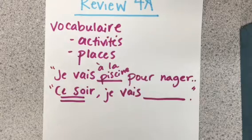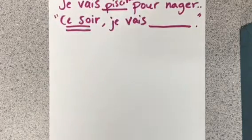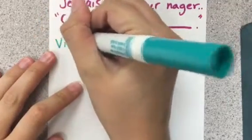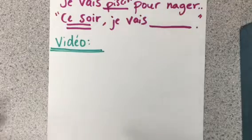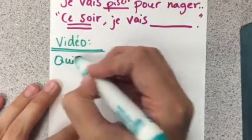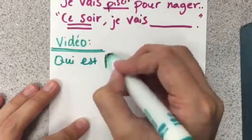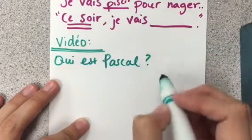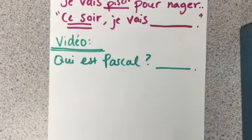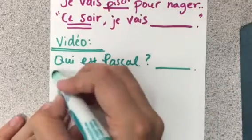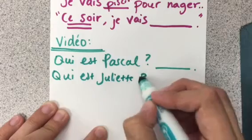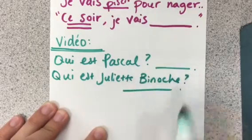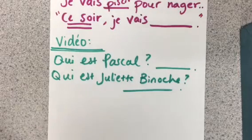Our next section is going to be on video first, and then we'll do culture. So a couple of video questions. First: qui est Pascal? Make sure you know who Pascal is — go back and look at your script if you're not sure or don't remember. And then our second one is: qui est Juliette Binoche? Make sure you know who she is. Those are the two video questions.